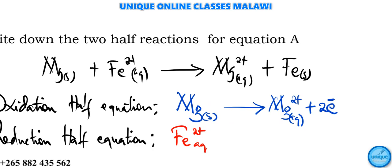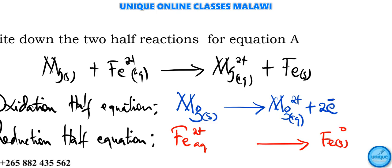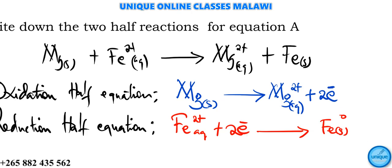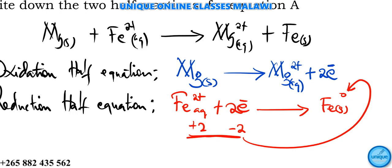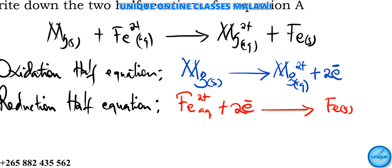For the reduction half equation, iron two-plus in aqueous state goes to iron solid. The oxidation number goes from two-plus to zero, so we need to add two electrons on the left-hand side: Fe²⁺(aq) + 2e⁻ → Fe(s). The two electrons (each minus one) give minus two, which combined with plus two equals zero - balancing both sides.